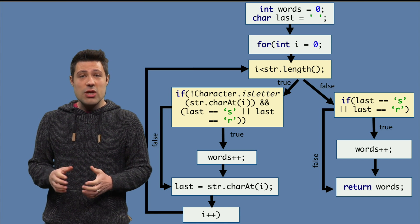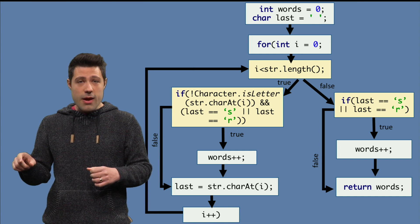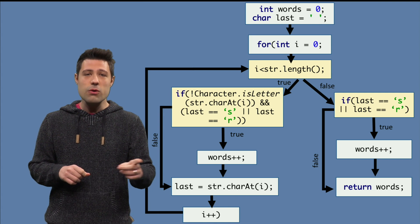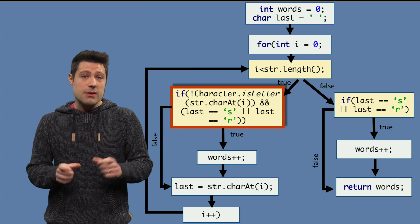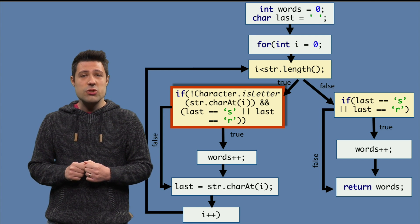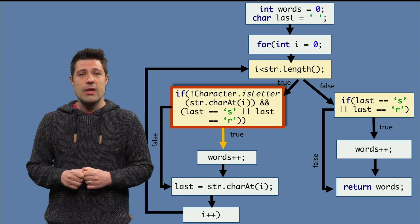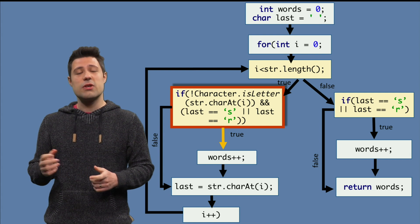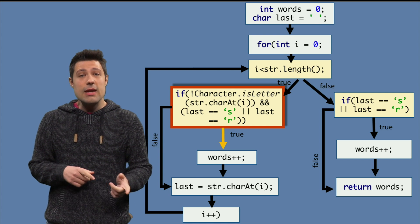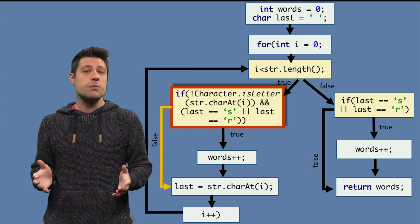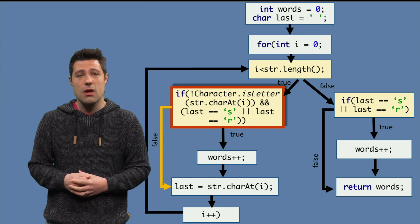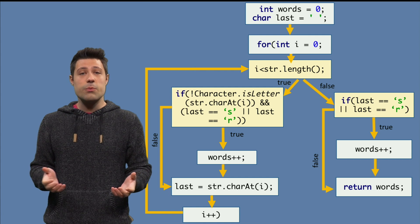Again, by branch, I mean a test that goes to the true path and a test that goes to the false path. For example, the big if we have, one of the tests should exercise the true path. In this one, the words++ is executed. Then another test should exercise the false path. In this one, the words++ is not executed. We then repeat it until all the branches are covered.